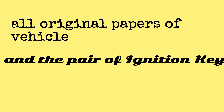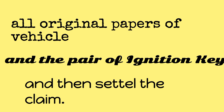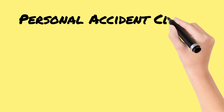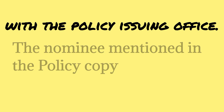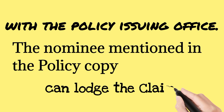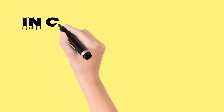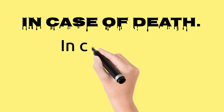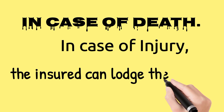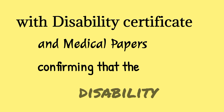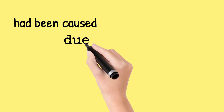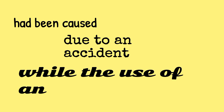A pair of ignition keys is also collected and then the claim is settled. Personal accident claim: If the insured met with an accident, the claim can be launched with the policy issuing office. The nominee mentioned in the policy copy can launch the claim in case of death. In case of injury, the insured can launch the claim with a disability certificate and medical papers confirming that the disability was caused due to an accident while using the insured vehicle.